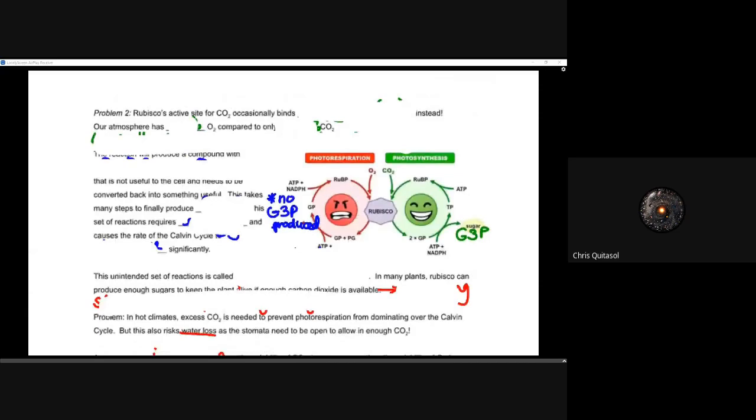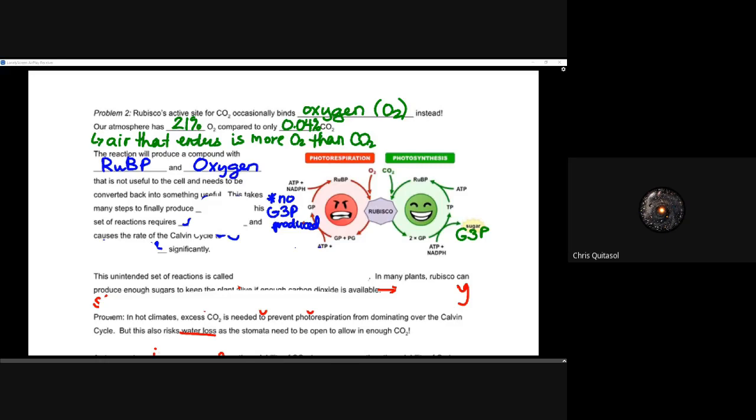The second problem is that rubisco's active site occasionally binds that oxygen. It's going to occasionally bind oxygen because when you think about our atmosphere, it's 21% oxygen compared to only about 0.04% CO2. That air that ends up in that cell or in the leaf is going to be way more O2 than CO2. As alluded to earlier, rubisco in fact binds to oxygen quite often. Unfortunately, it loses that capability to fix that carbon dioxide. This reaction will produce a RUBP molecule with oxygen. What is the problem with that? Well, it's not useful.